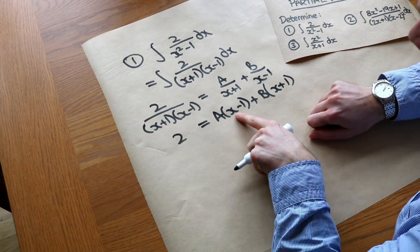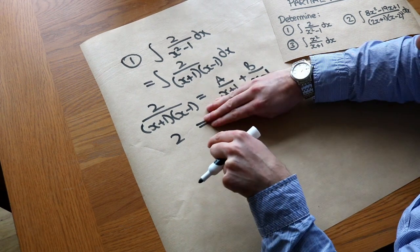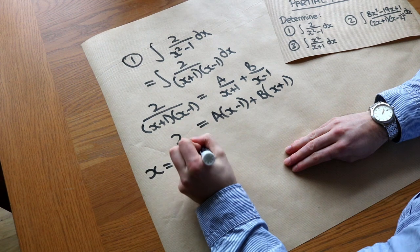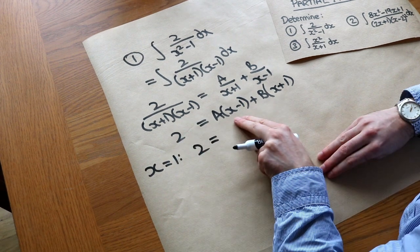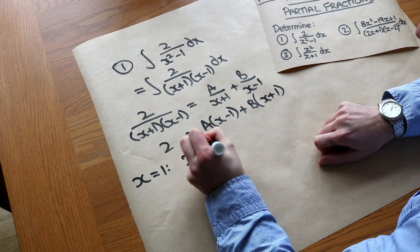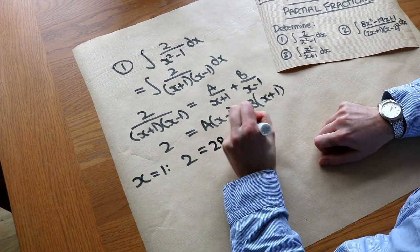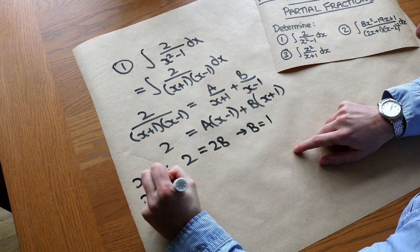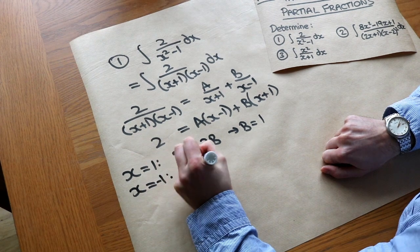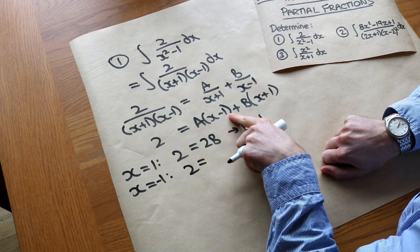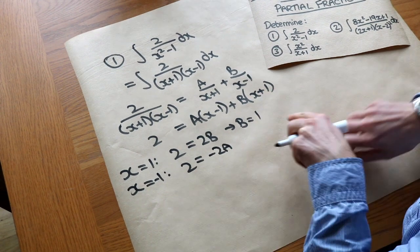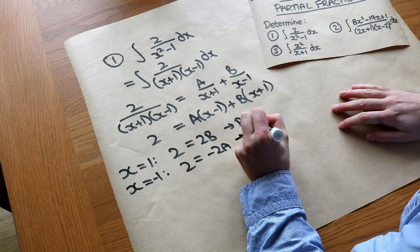If we substitute x=1, that makes (x-1)=0, wiping out the A term. So we still have 2 on the left-hand side, and we have B times (1+1), which is 2B, giving B=1. Similarly, if we substitute x=-1, that gets rid of the B term. We get 2 = (-1-1)A = -2A, so A = -1.